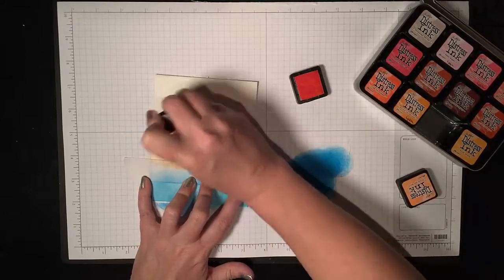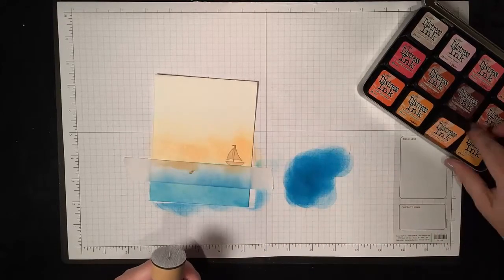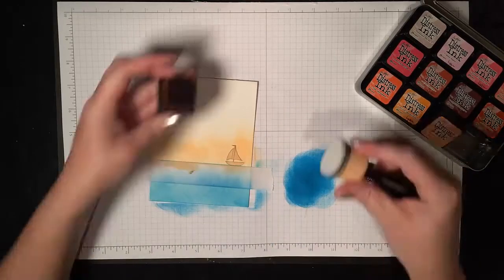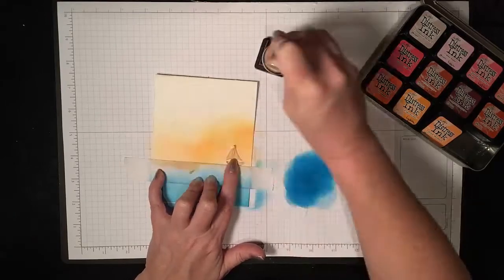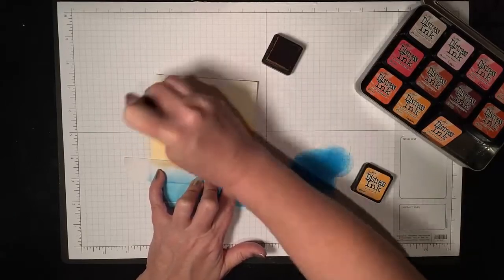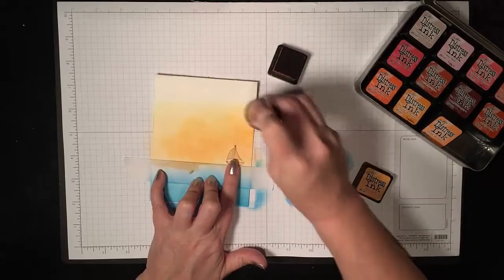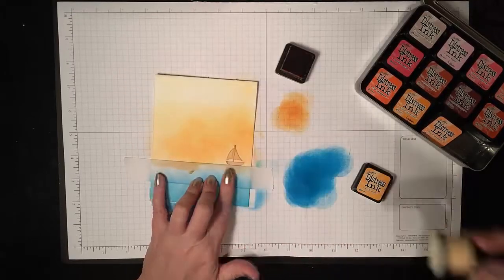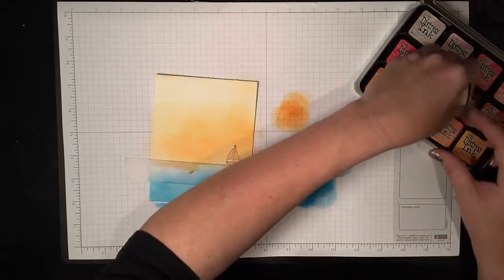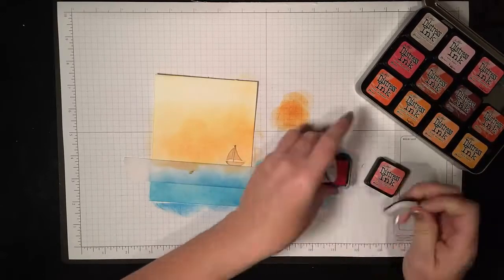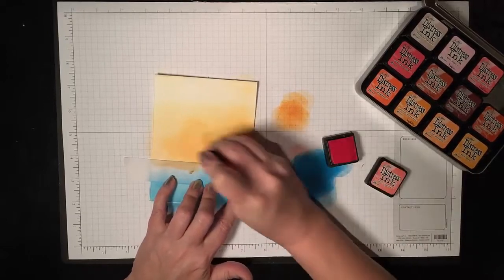Now I'm using my little mini Distress inks. I love how the foam fits into the bottom of the ink pad, so I've actually switched to the minis. I like them a lot. For the sky I'm using dried marigold first, and then I will add some wild honey just to increase the yellow a bit, and then you have to have a little rosy glow when you have a sea scene, and so that color is worn lipstick.